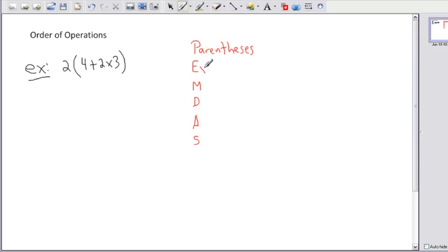And then the E stands for exponents. M stands for multiplication. D stands for division. A is, I'm sure you can guess it now, addition. S is subtraction. Now what this means, this tells you in what order should you do things. So first step, do parentheses first. After that, do exponents, then multiplication, then division, addition, subtraction.